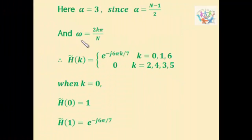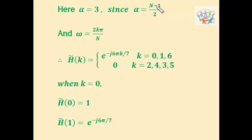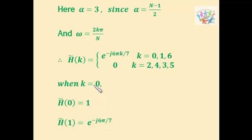Now substituting omega equal to 2kπ/N we get e^(−j6πk/N). We know from the question that alpha is 3 and we have the formula alpha equal to (N−1)/2. From this we find N equal to 7. So H̄(k) equals e^(−j6πk/7) for k values 0, 1, and 6, and 0 for k values 2, 3, 4, and 5.